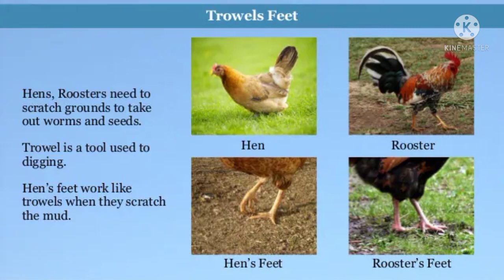Next are the trowel feet. Hens and roosters need to scratch the ground to take out worms and seeds. They need to dig on the ground, so their claws are like a trowel. A trowel is a tool used to dig a hole. That's why their claws are called trowel feet — hens' feet work like a trowel when they scratch the mud.